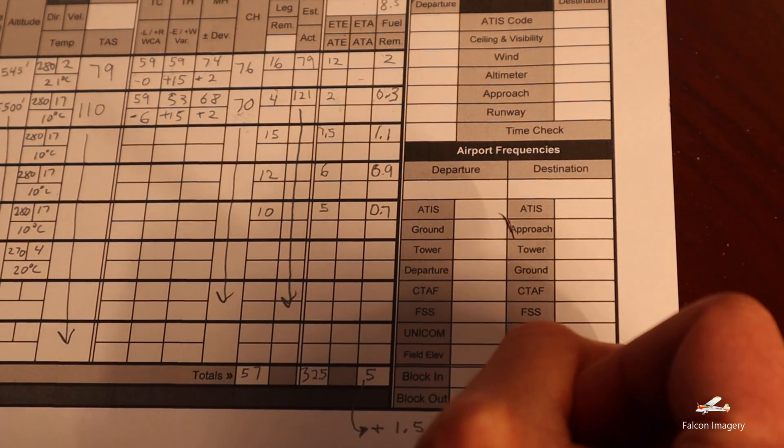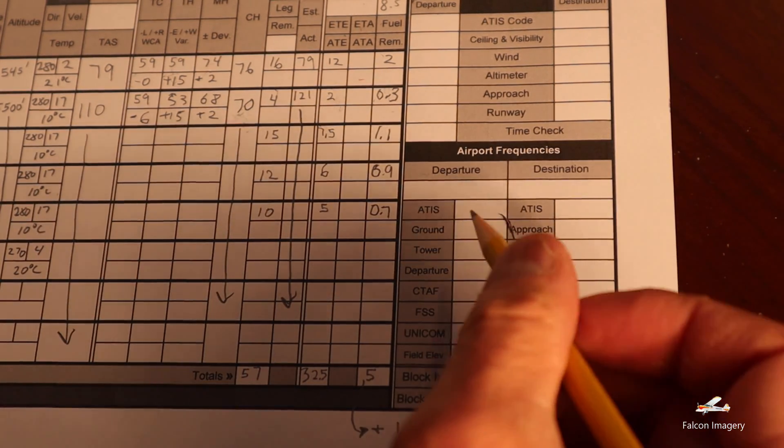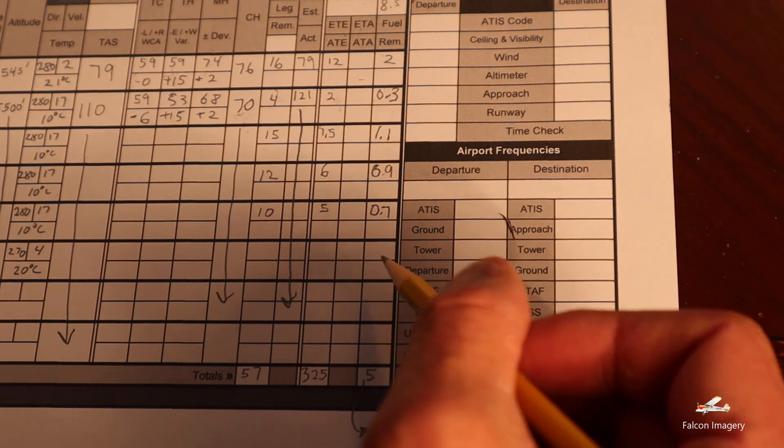So we would burn roughly six and a half gallons from engine start to arriving at our destination at Auburn-Lewiston, Maine.